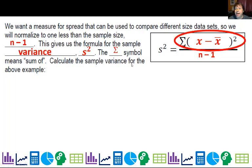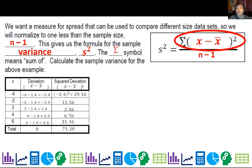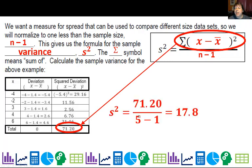Alright, so if I'm going to calculate that we're going to do this for our above example. Where does that come from in our data? Well, here's the deviations. Here's the squared deviations and here's the sum of the squared deviation. So that's the number we want.